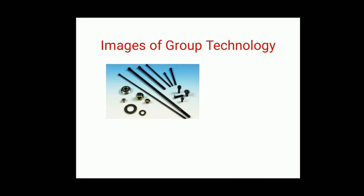Looking at this image of group technology, we can see there are rods, bolts, nuts, and washers. We can easily create different groups using the first method — visual inspection. The large rod forms one separate group; short bolts form another group; nuts form another group; and washers likewise form their own group. By using visual inspection, you can create different groups.